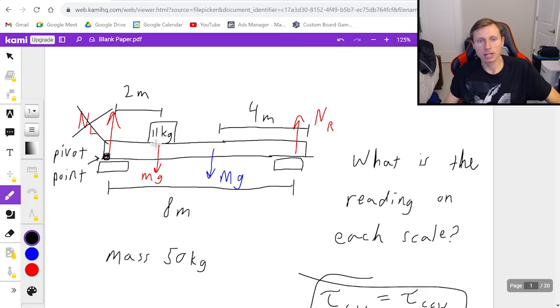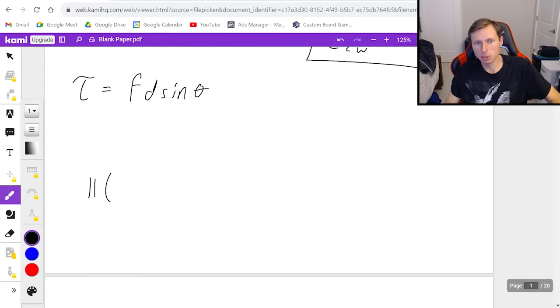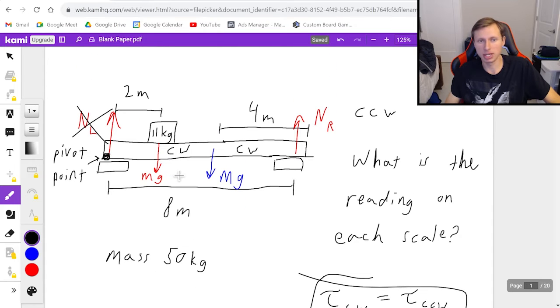Now I'm going to focus on the other three forces. Let's start with little mg here, the 11 kilograms. I would say this is clockwise. As a matter of fact, this one's clockwise, this mg is also clockwise, and the normal force on the right is counterclockwise. So I'm going to add this one and this one on one side of my equation and set it equal to NR on the other side.